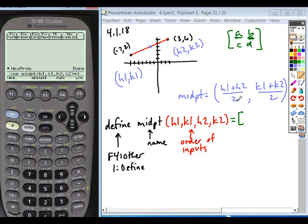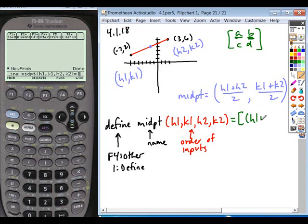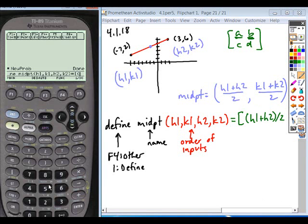So what we're going to do is we're going to type in this information. H1 plus H2 all divided by 2 as our first set. So in parentheses, H1 plus H2, close parentheses, divided by 2. Okay, so this is going to give us our X coordinate of the center, or the midpoint.